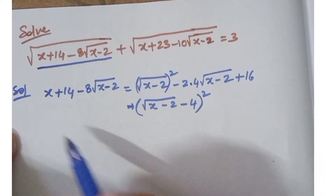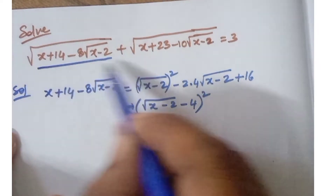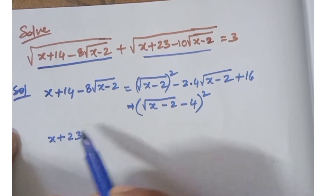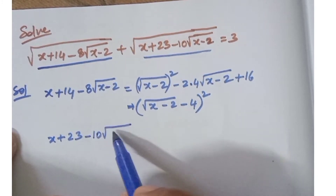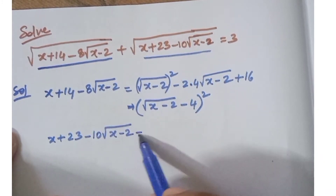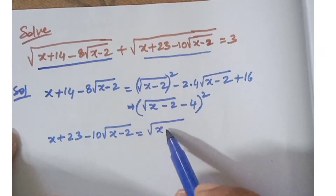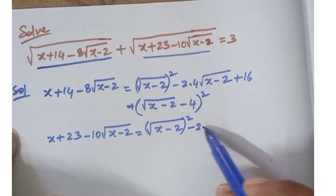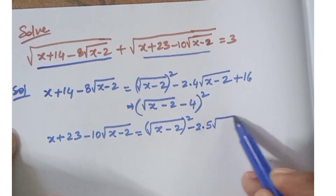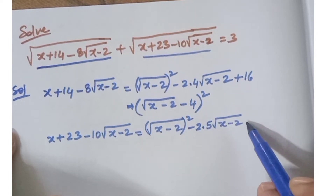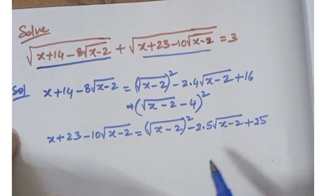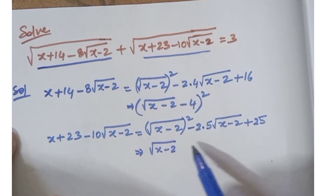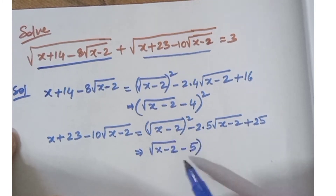If you expand that you get the same expression. Now for the second part: x plus 23 minus 10 root of x minus 2. This is root of x minus 2 whole square, minus 2 into 5 into root of x minus 2, plus 25 — which equals root of x minus 2 minus 5, whole square. If you know this logic you can solve this problem very easily.